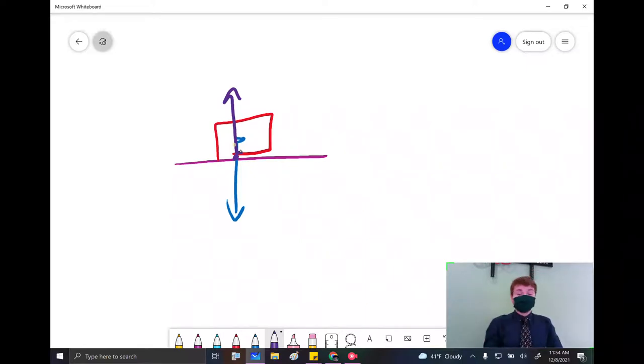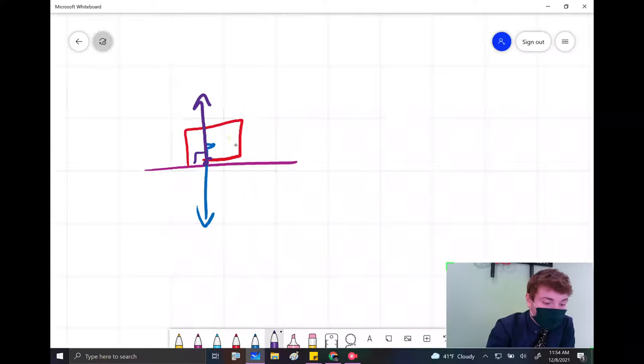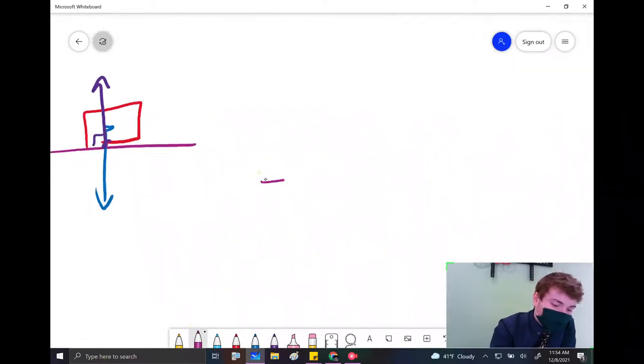So on a flat surface, it's really easy. Gravity goes down, normal force goes up. But what's really going on here is that the normal force is making a 90 degree angle. It's perpendicular to the surface. And that principle always needs to apply, even when we're on an incline.